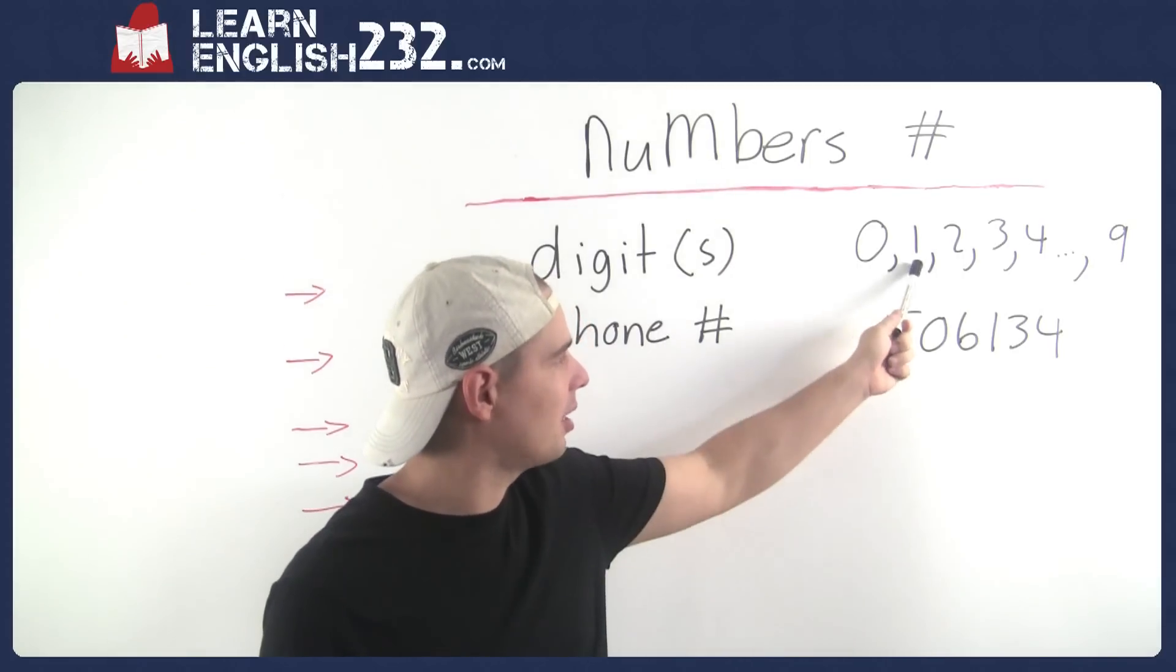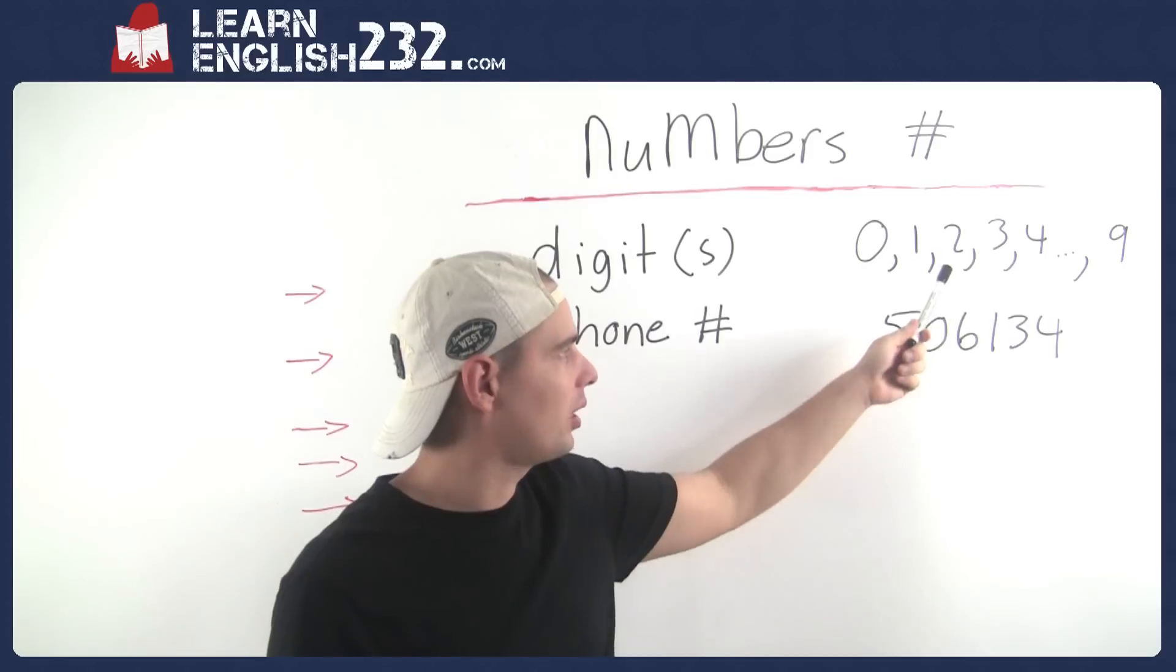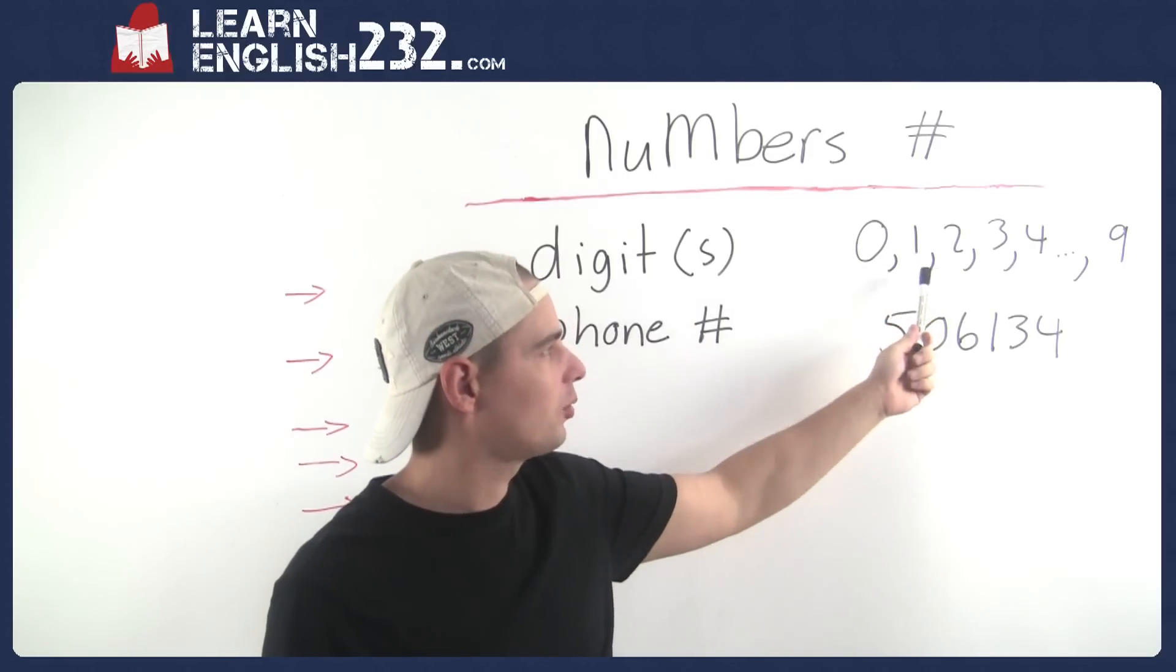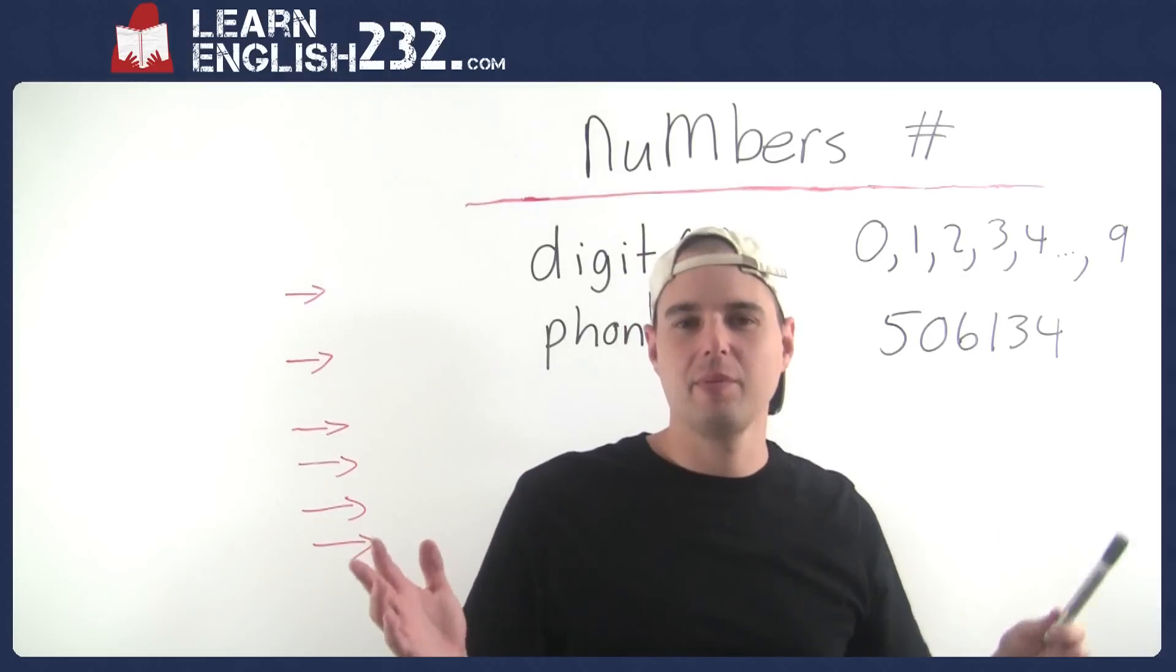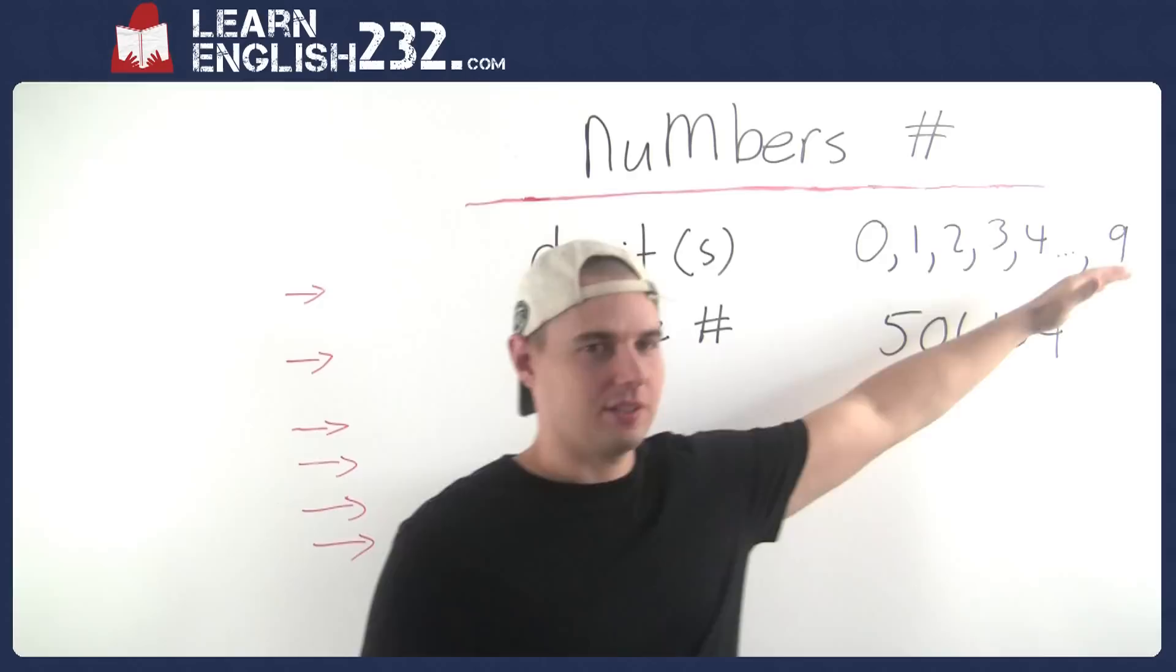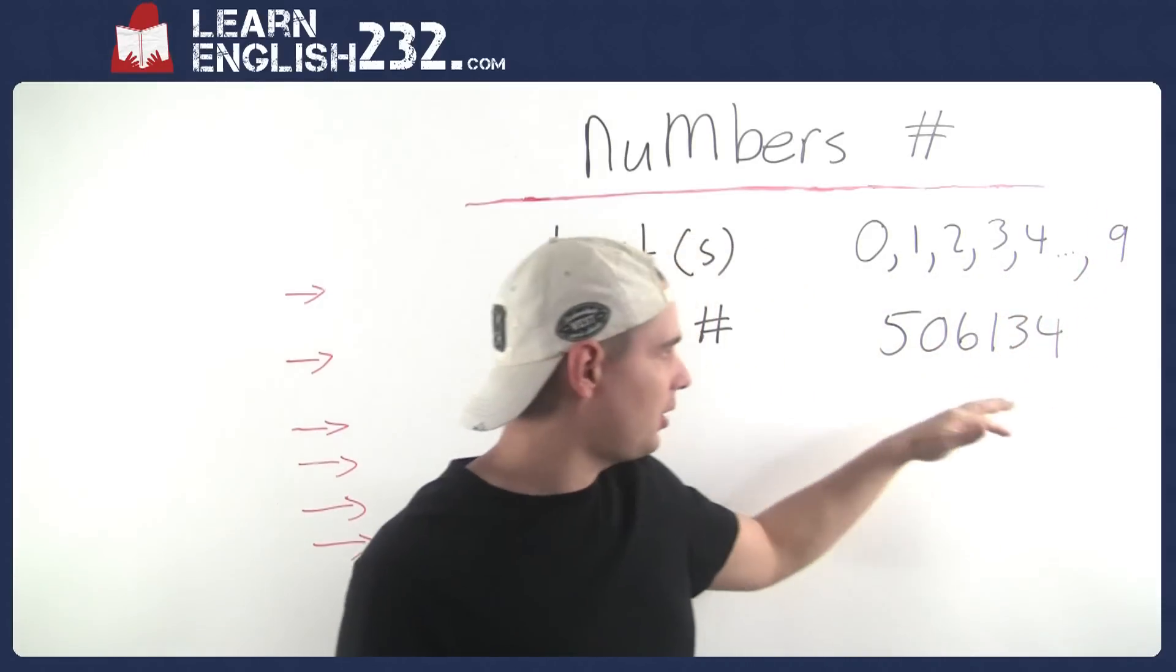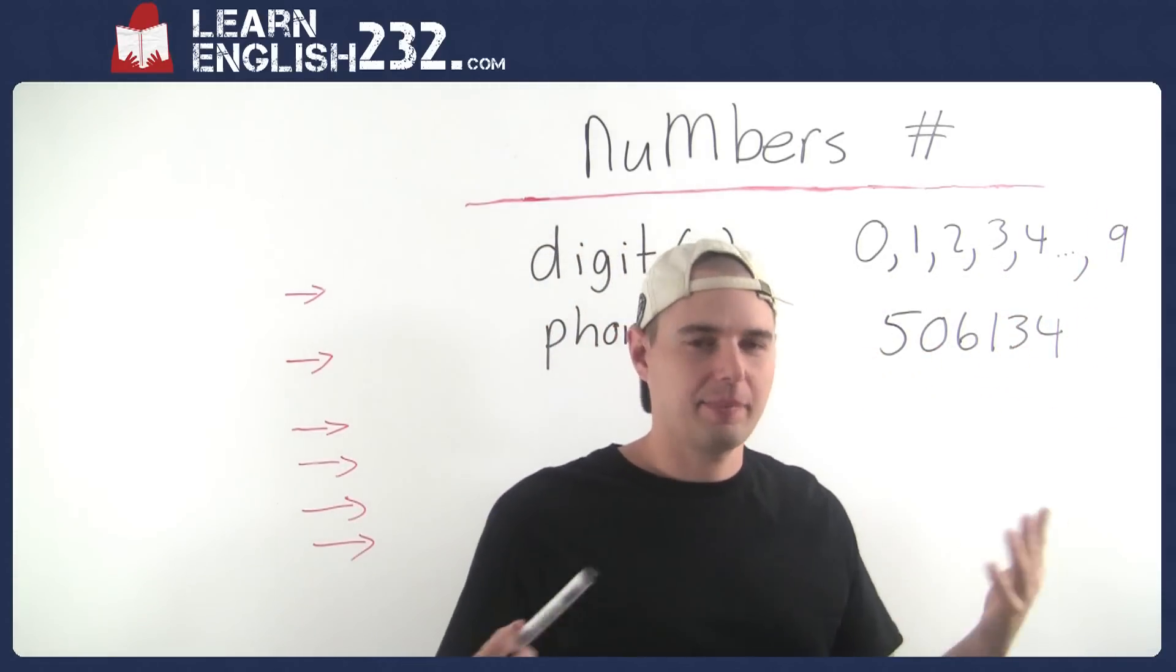10 is the number 1 and a 0. 20 is 2 and a 0. 21 is 2 and a 1. 12 is 1 and a 2. 14 is 1 and a 4. You can't make any numbers without using the digits. So each one of these is a digit and sometimes we need to count digits in some kind of a number.